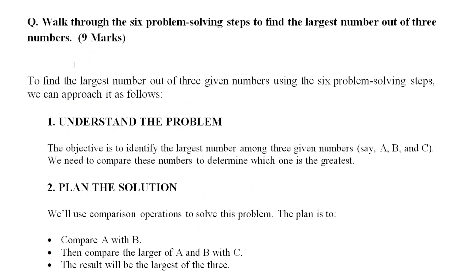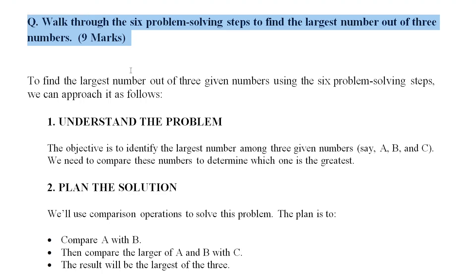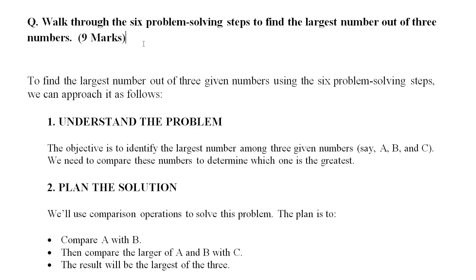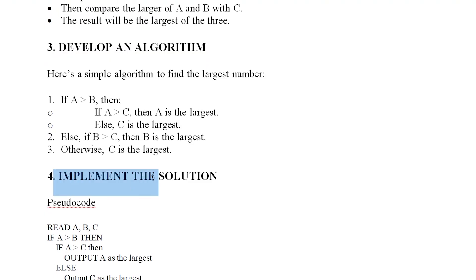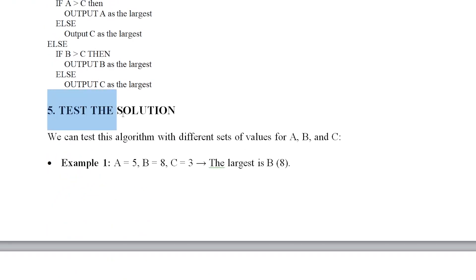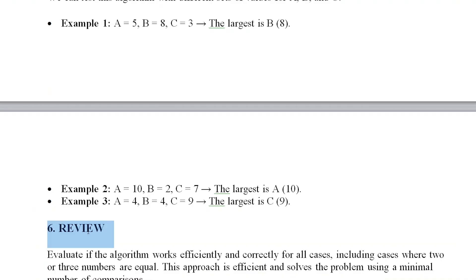Now let's look at part 2 of the question: walk through the 6 problem-solving steps to find the largest number out of 3 numbers. We've already done this in the first and second module — it's done in algorithm and pseudocode. The 6 steps are: 1st understand the problem, 2nd plan the solution, 3rd develop an algorithm, 4th implement the solution, 5th test the solution, and finally review.